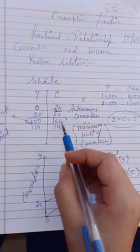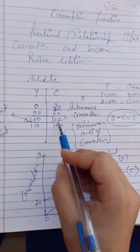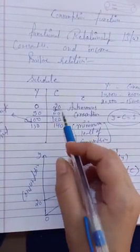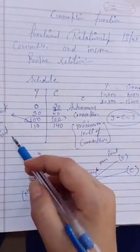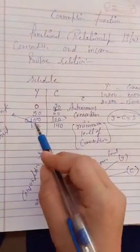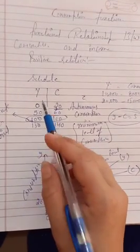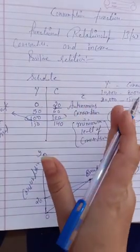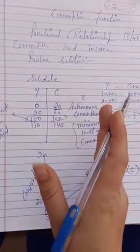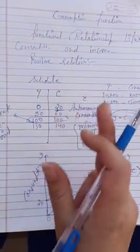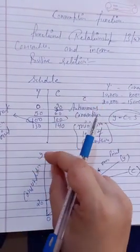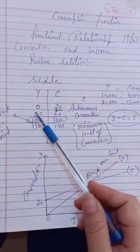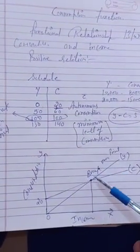Here is a question: suppose C-bar is 100. What will be the value of Y at that point? Some students might say 100, but the correct answer is zero. Whatever the value of C-bar is, at that point Y is zero — because C-bar is the autonomous level of consumption, meaning the consumption that exists when income (Y) is zero.